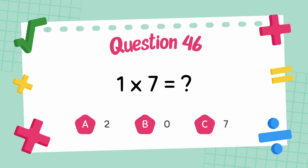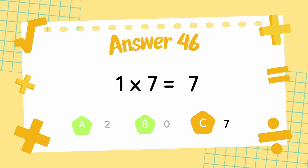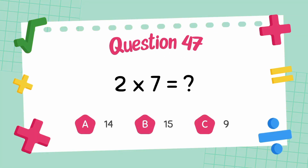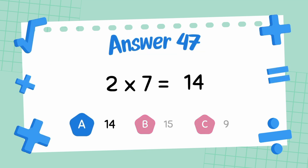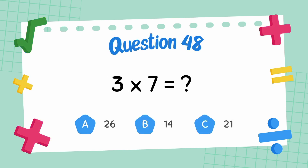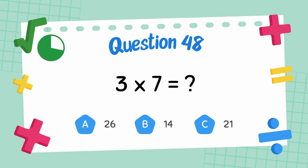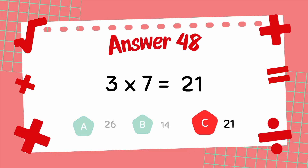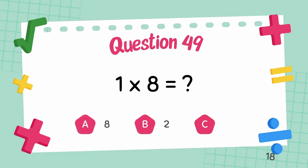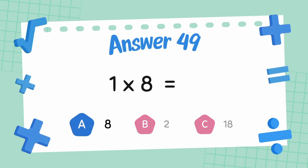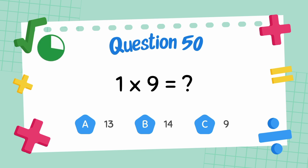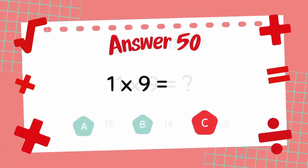What is 3 multiply 7? The answer is 21. What is 1 multiply 8? The answer is 8. What is 9? The answer is 9.